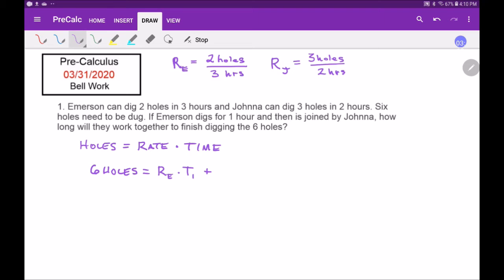Plus, I know that rate times time is holes, so there's the first part of the holes. And then the second part of the holes is Emerson works times the second time where they're both working. When I add it all up, I get six holes. Notice that when I multiply by time, the hours cancel.